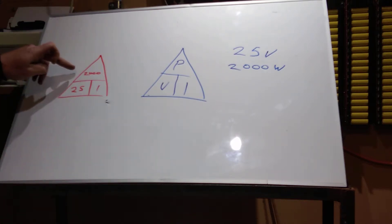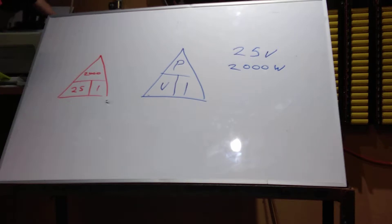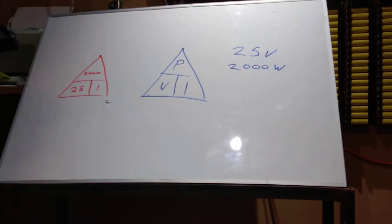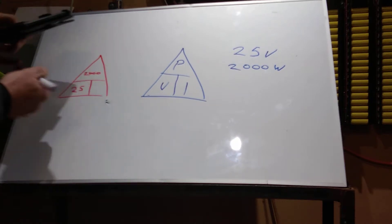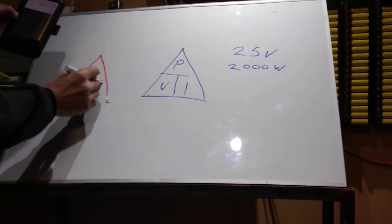Simple. 2,000 divided by 25. I can't add up too quickly, but we'll get the calculator out. So 2,000 divided by 25 equals 80. So we know now 80 amps.